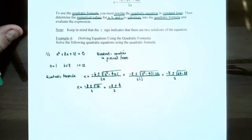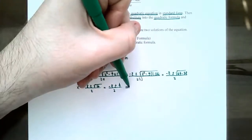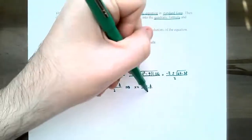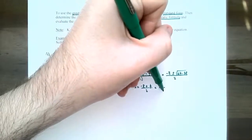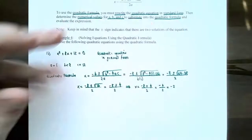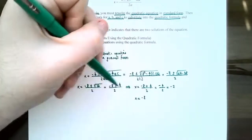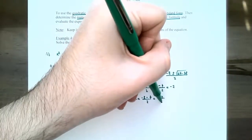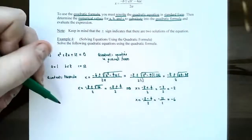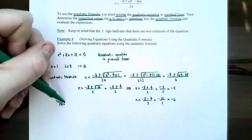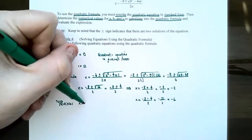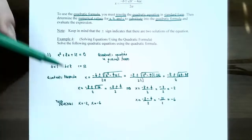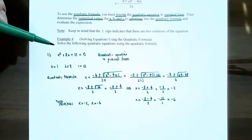The plus or minus means we have two solutions. The first solution: x equals negative 8 plus 4, all divided by 2, which gives negative 4 divided by 2, or negative 2. The second solution: x equals negative 8 minus 4, all divided by 2, which gives negative 12 divided by 2, or negative 6. The two solutions are x equals negative 2 and x equals negative 6. Notice the answers are integers, meaning you could have factored the original equation.